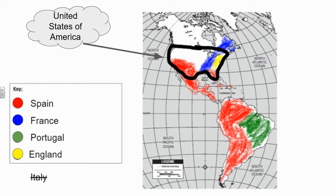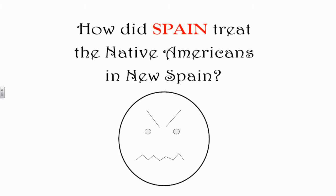If you look at the land outline there, that is today the United States of America. You can see that some of that land was controlled by Spain, some by France, and some by England. When Spain claimed land in the Americas, they did not treat the Native Americans very well in their new land, New Spain. They murdered Native Americans, they stole from them, they enslaved them and took their land.